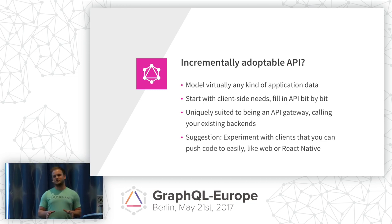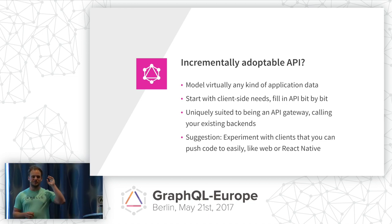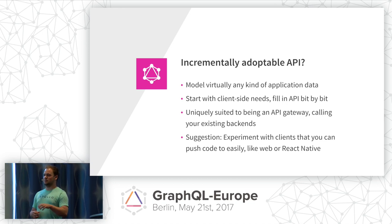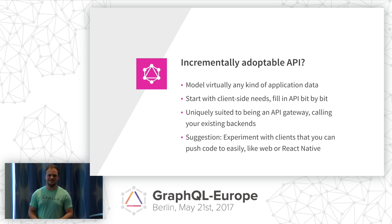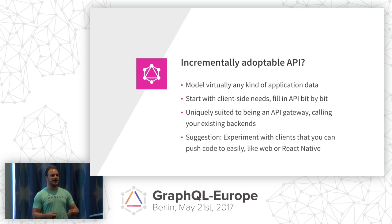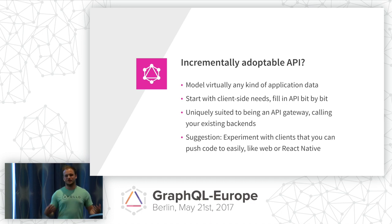One suggestion for incrementally adopting: don't build it into your native app and push it to the app store if you're not really sure. If you want to experiment with GraphQL, probably the best place to start is with something like JavaScript — a web app or a React Native app that you can easily replace if you decide you want to switch, to OData for example.